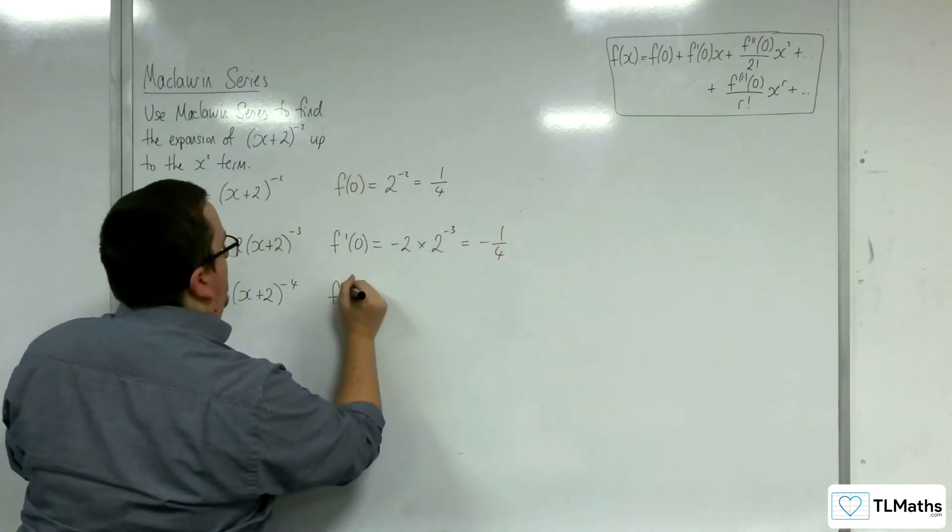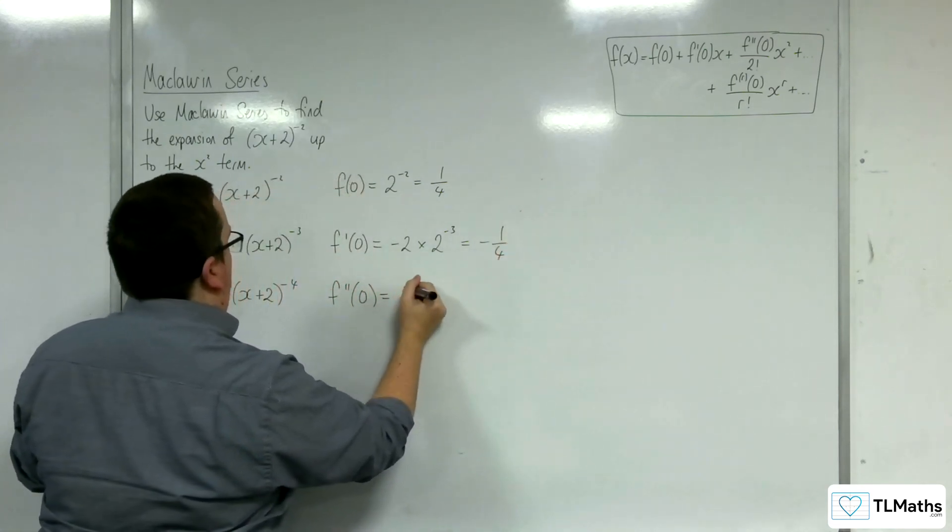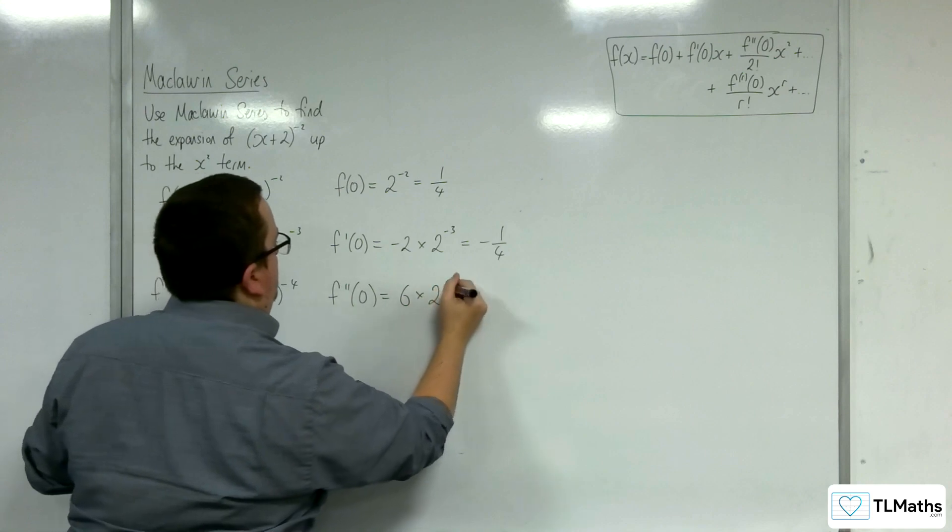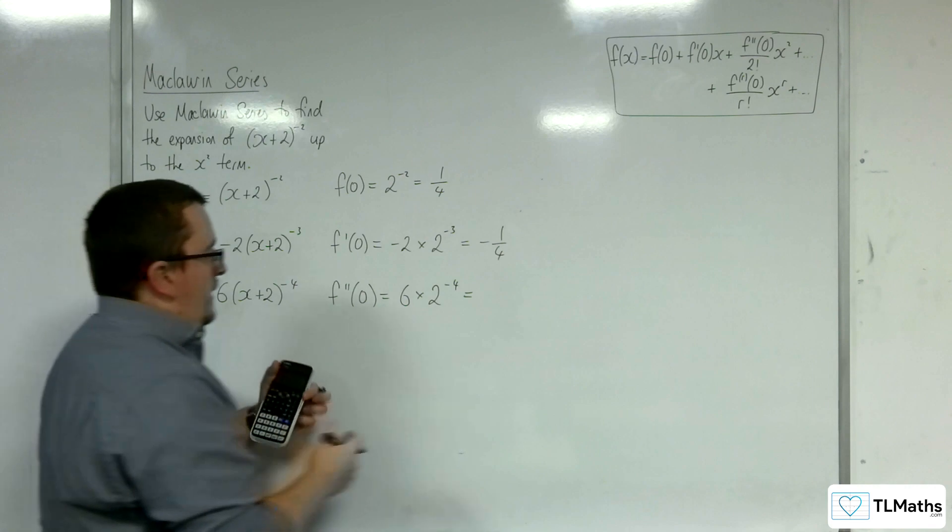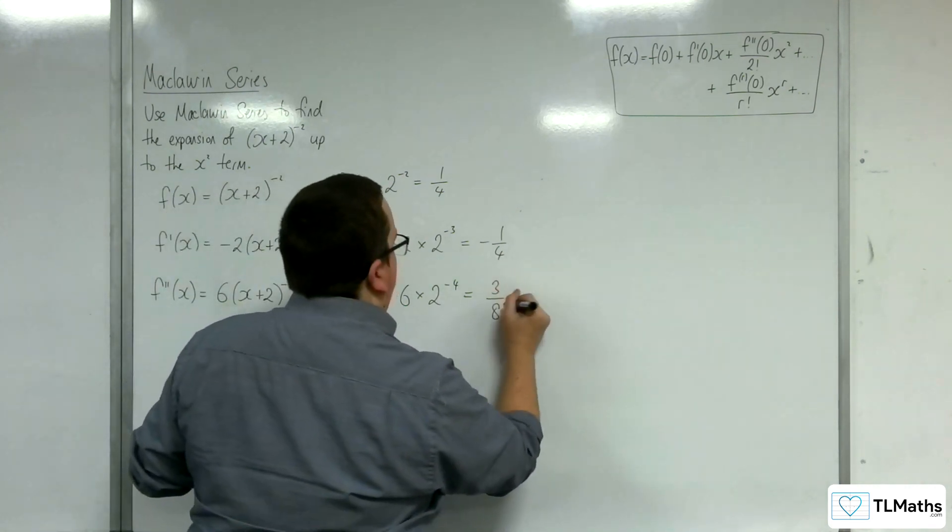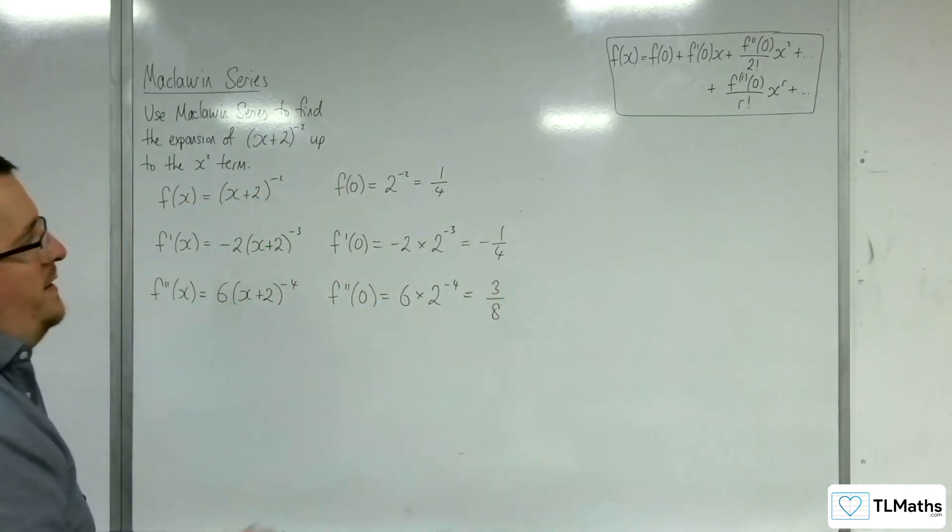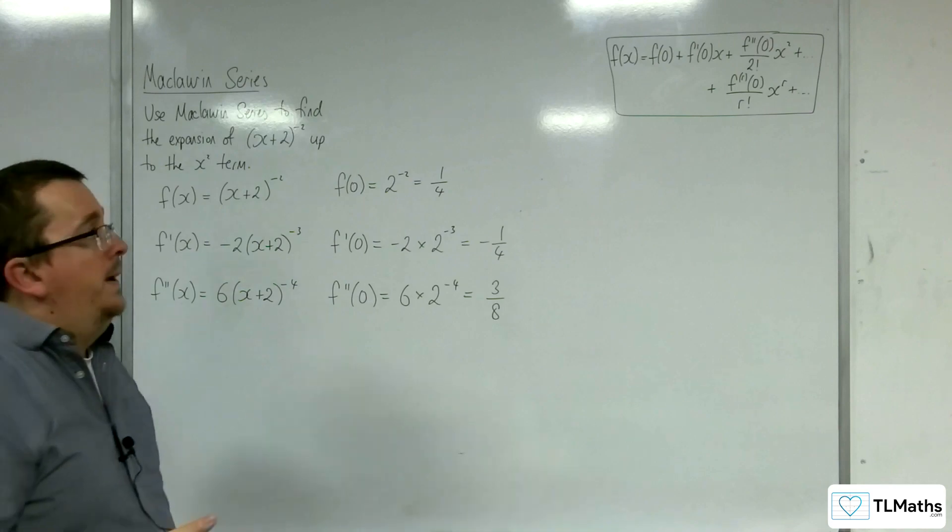And then f''(0) is equal to 6 times 2^(-4). So 6 times 2^(-4) is 3/8. Okay, so we should be ready to put it straight into the formula now.